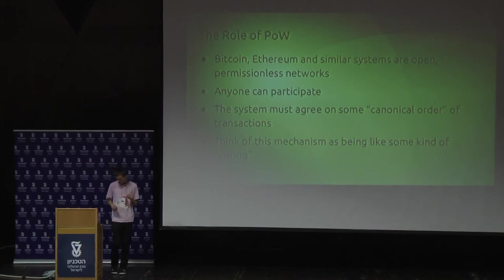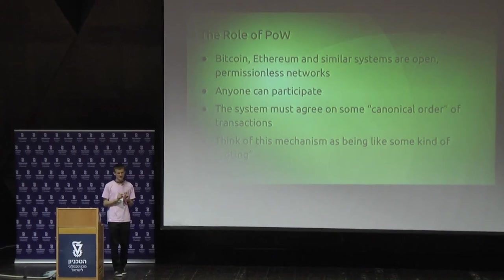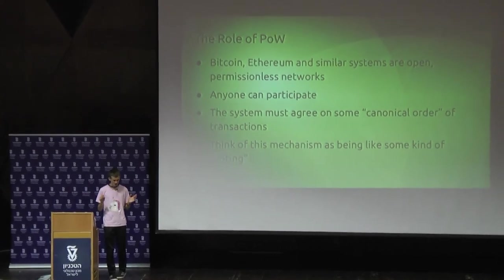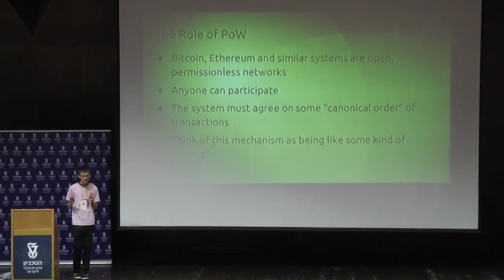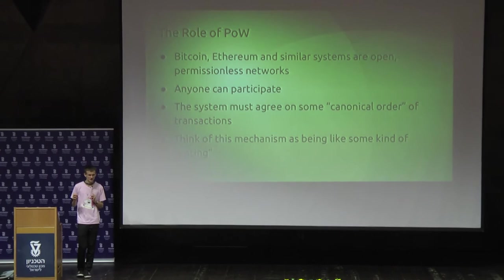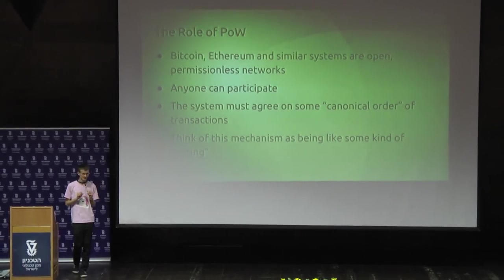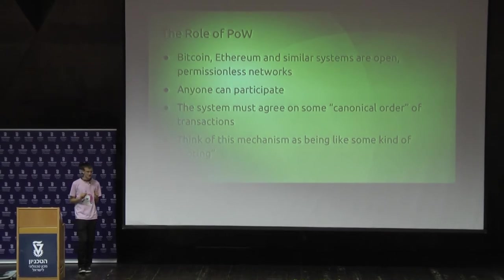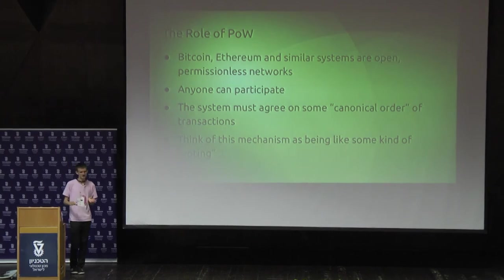In traditional security settings, you might say things like: you have 10 people running the system and as long as six of them are honest, the system works. You can see how that might make sense if those 10 people are major banks or governments or very trustworthy individuals. But if these 10 people are just random anonymous people, then you have different kinds of considerations that you have to deal with.